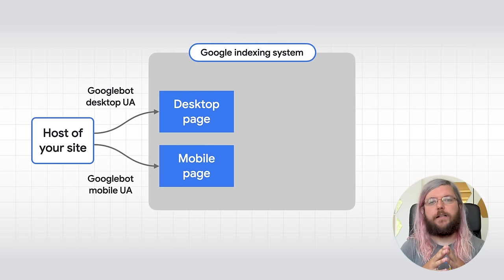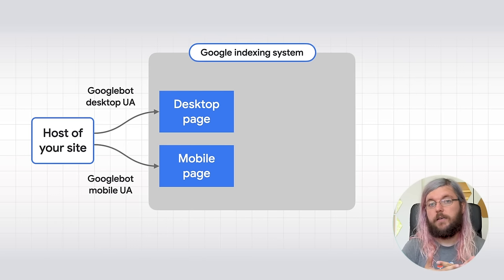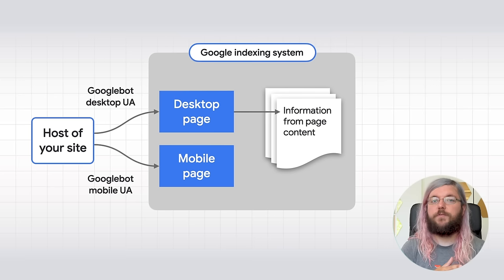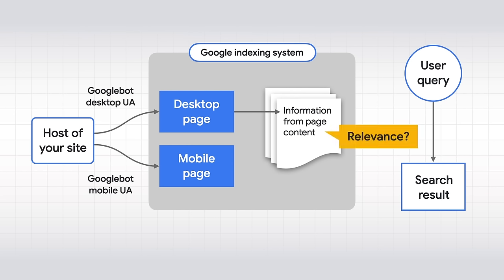As many of you may already know, mobile-first indexing is an ongoing effort by Google for several years. So what is mobile-first indexing exactly? Let's look at how Google indexing works. First, Googlebot will crawl URLs from your site with the desktop and mobile user agent. With the original desktop-first indexing, the indexing system will get the page information from the desktop page content. Finally, the page will be shown in the search results if the information has enough relevance for user queries. With mobile-first indexing, the indexing system will look at the mobile page instead of the desktop page for information.